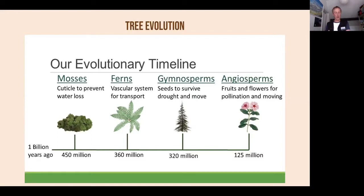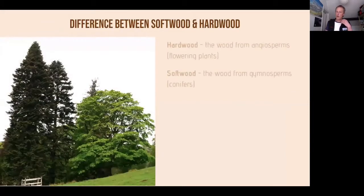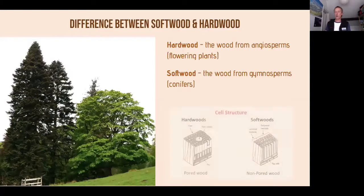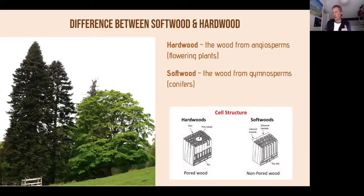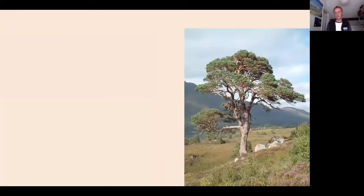One final distinction: hardwood refers to angiosperms — flowering plants — and softwood refers to conifers or gymnosperms. It's all to do with cell structure. You can get a very dense hardwood or a very lightweight hardwood like balsa wood. These are technical distinctions — the slides are available to keep.